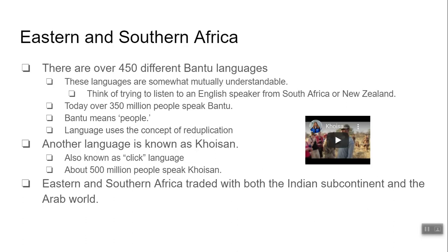One of the coolest things about Bantu language is the idea of reduplication. If something is a plural or multiple, they duplicate the word. For example, the word 'piga' (P-I-G-A) means 'to strike'; 'piga piga' means 'to strike repeatedly.' The other big language group is called Khoisan — the click language. There's a YouTube video in the PowerPoint where you can hear them speaking. There are about 500 million people who speak Khoisan, and the clicks actually serve as consonants within their words.